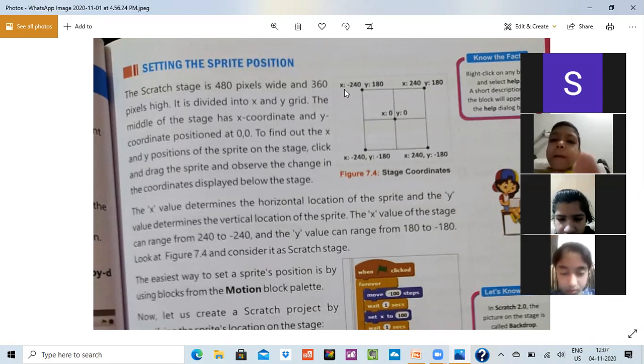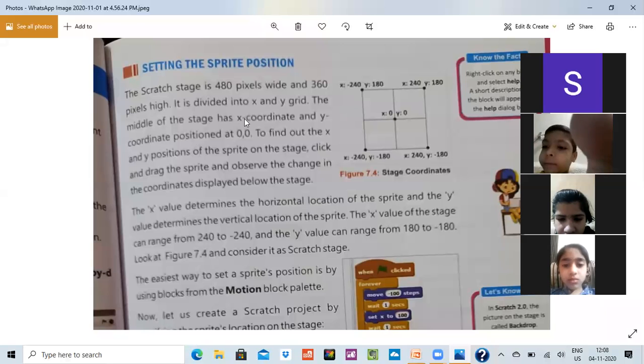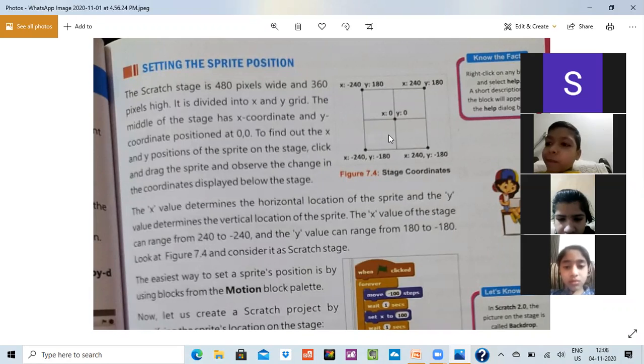Ek grid ko hum X bolte hain aur ek grid ko hum Y bolte hain. The middle of the stage has an X coordinate and Y coordinate positioned at 0. Jo aapki screen ka beech ka point hota hai, usko hum zero aur zero consider karte hain. And after that this is your X is moving and this is your Y is moving.